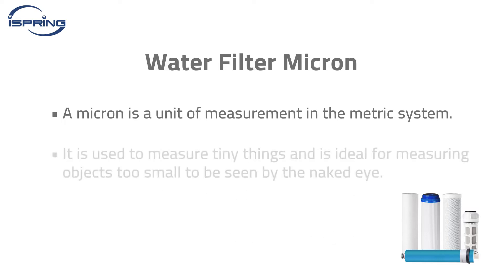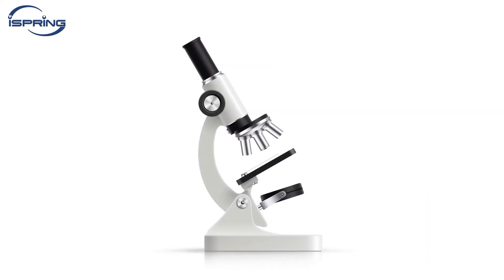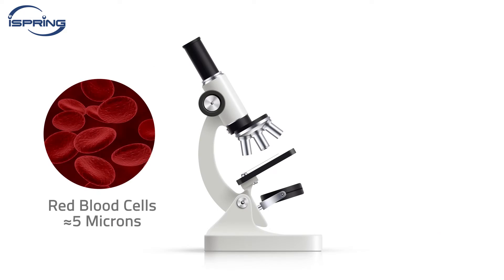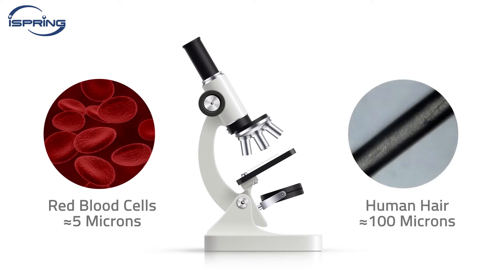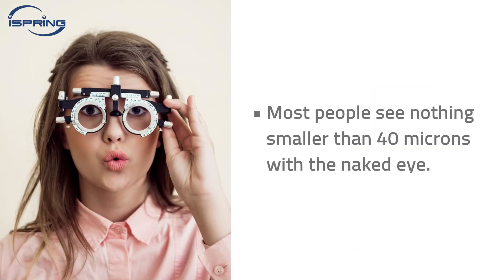It is used to measure tiny things and is ideal for measuring objects too small to be seen by the naked eye. For example, human red blood cells are five microns. The average diameter of a human hair is 100 microns. Most people see nothing smaller than 40 microns with the naked eye.